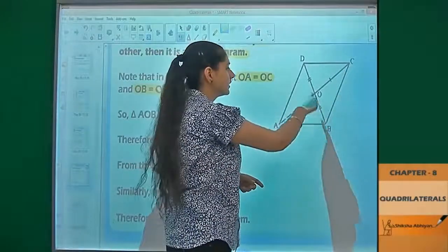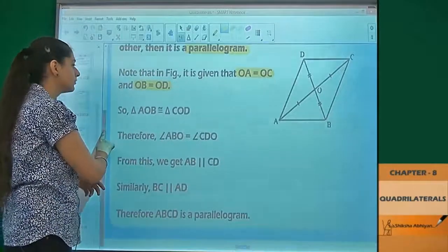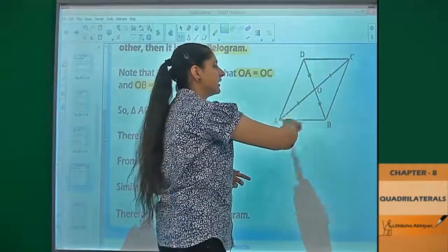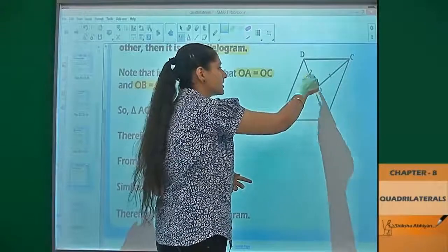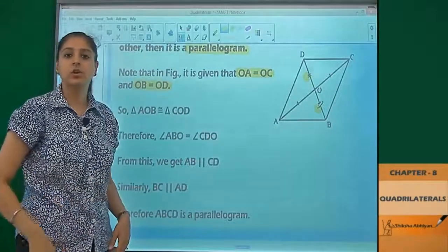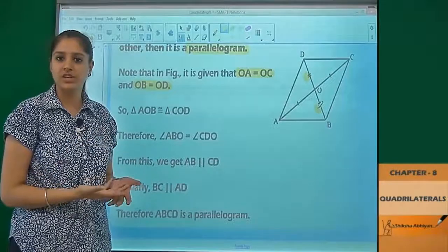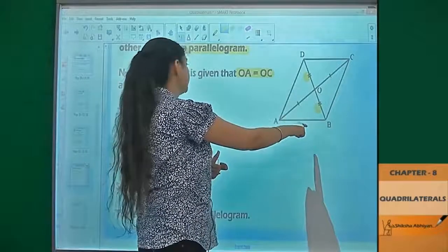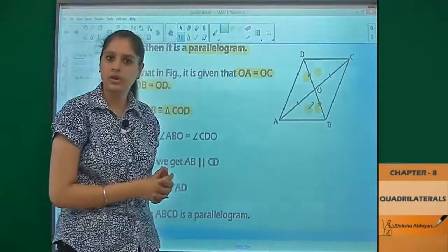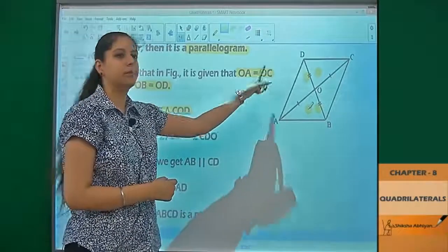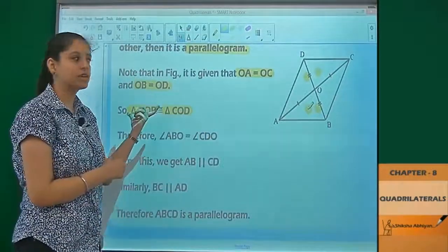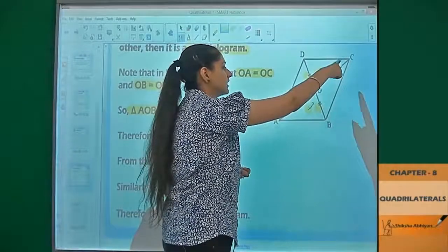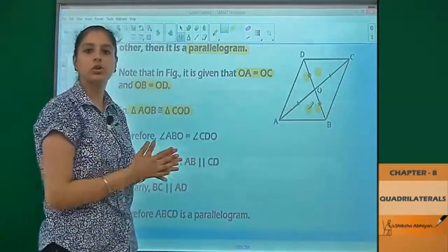That means this portion is equal to this portion, and this one is equal to this one. We have to prove that this is a parallelogram. Looking at the diagonal, it divides the figure into two triangles. Those two triangles should be congruent. So we consider triangles AOB and COD. We can show OA equals OC and OB equals OD, so these two are congruent.